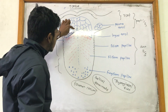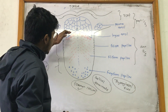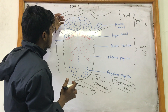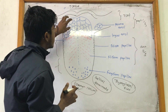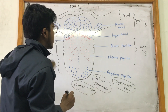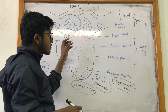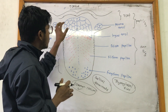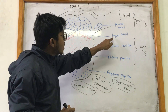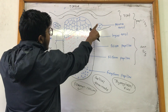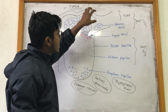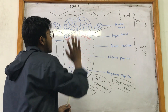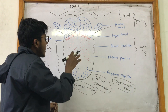The anterior two-thirds of the tongue is lined with papilla, whereas the posterior one-third has no papilla — it is lined with lymphoid aggregates known as lingual tonsils. These lymphoid aggregates provide protection against infections. On the sides of the lingual tonsils, there are palatine tonsils present on the palate.